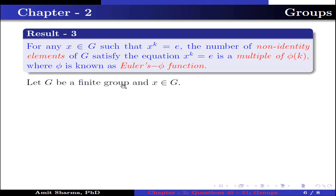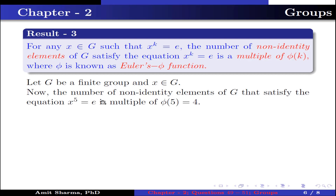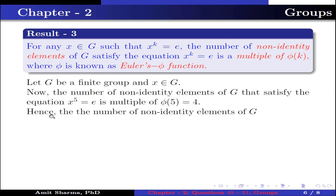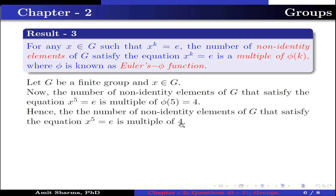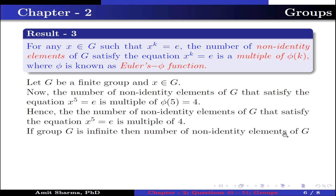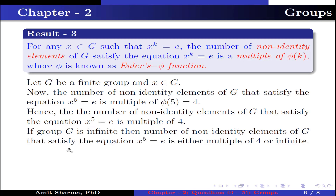Let G be a finite group and x belong to G. The number of non-identity elements of G that satisfy the equation x^5 = e is a multiple of φ(5), which equals 4. Hence the number of non-identity elements of G that satisfy x^5 = e is a multiple of 4. If group G is infinite, then the number of non-identity elements of G that satisfy x^5 = e is either a multiple of 4 or infinite.